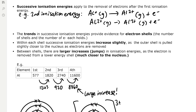Successive ionisation energies apply to the removal of electrons after the first ionisation energy. The second ionisation energy is when Al1+ goes to Al2+ and you lose an electron. The third ionisation energy is when Al2+ goes to Al3+ and you form another electron, and so on.